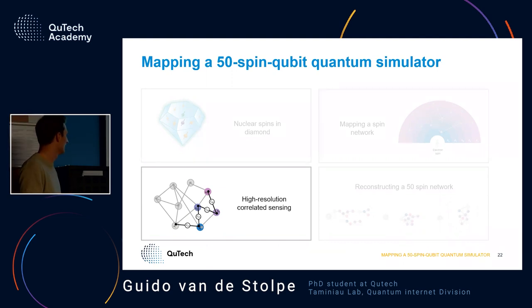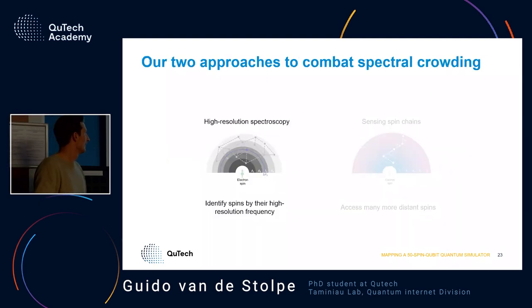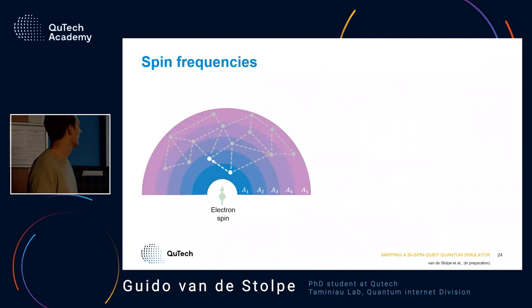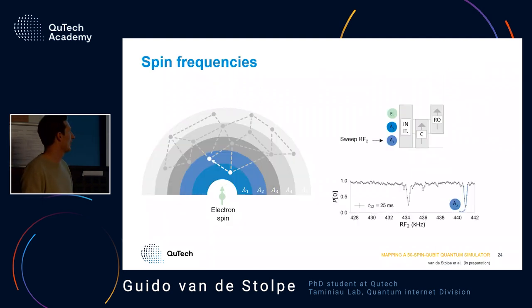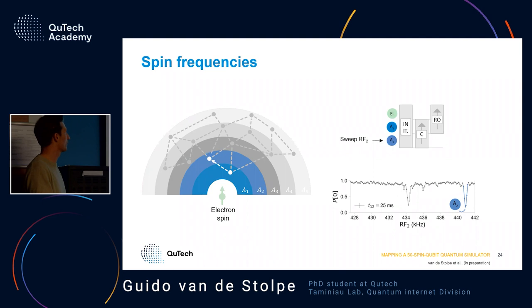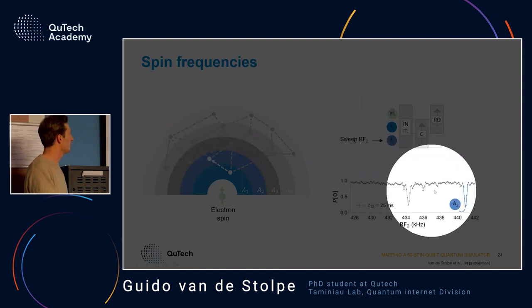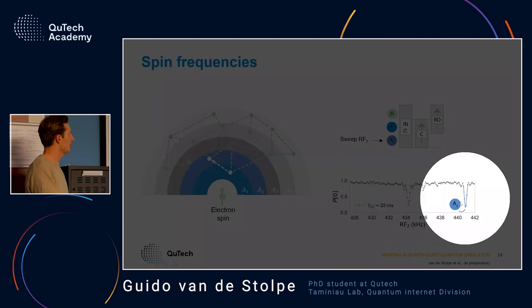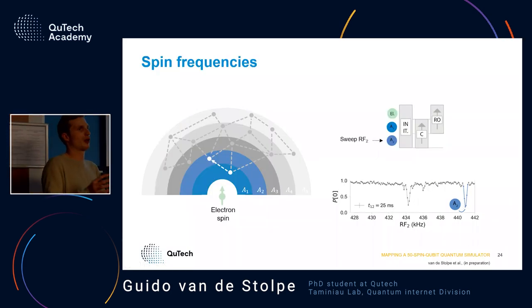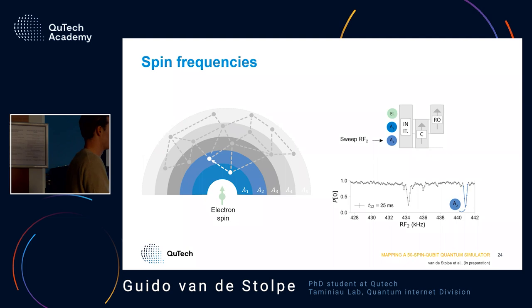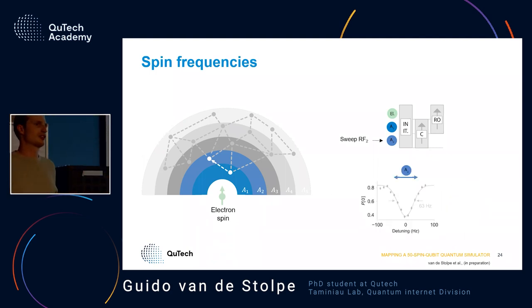How do we do this high-resolution frequency sensing? Normally we do this SEDOR, sweep the RF frequency, and see different dips — the width of the dip basically tells me how well I can know this frequency. If the dip is very broad it's hard to say exactly what frequency it is. Zooming into one of these dips, it's typically about 60 to 100 Hz, which is still quite broad for us.